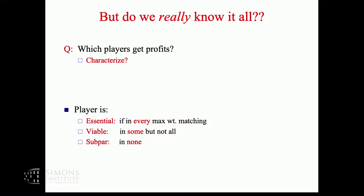I'm going to classify players into three categories. Essential ones are matched in every max weight matching. Viable ones are matched in some max weight matchings and not matched in others. Subpar ones are never matched in max weight matchings. Which players get profits? Subpar gets zero. But what will give the answer is the following thought: the worth of the game comes from an optimal solution to the primal LP. A core imputation comes from an optimal solution to the dual LP. What connects them?